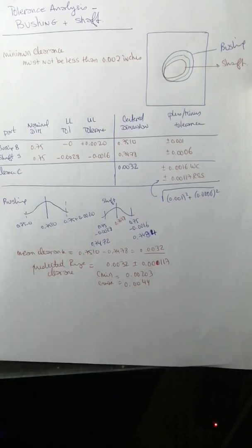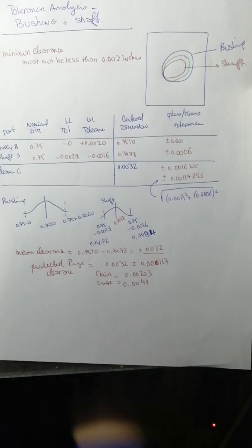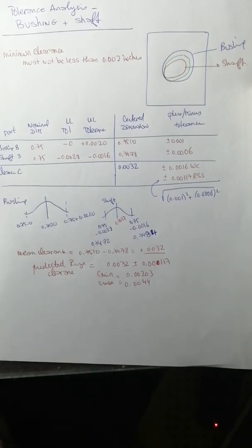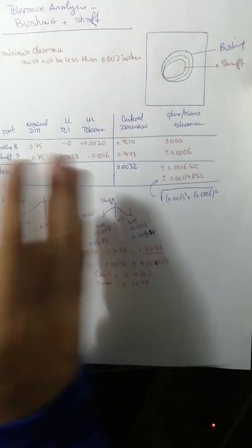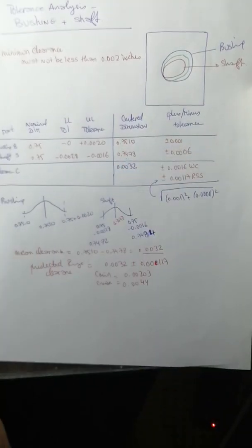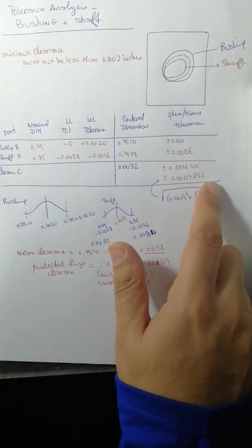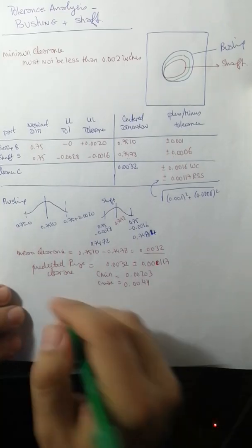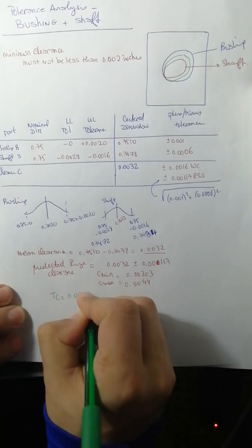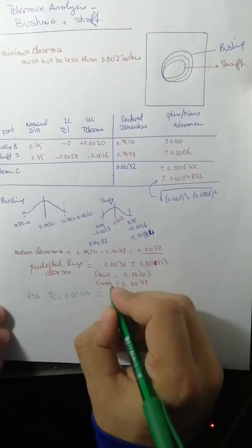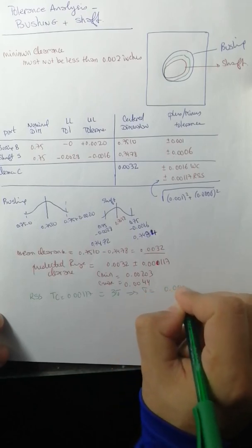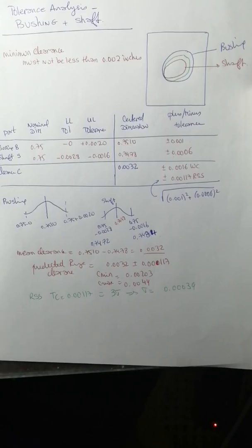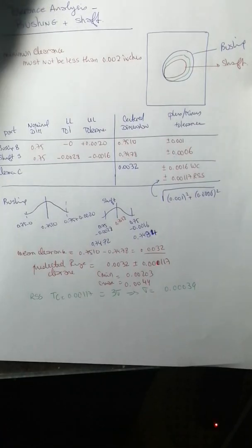I need to bring your attention that we've got the average which is 0.0032, but we've not got the standard deviation. We're all familiar with the concept of 6 sigma, which is the mu plus 3 sigma and mu minus 3 sigma. The tolerance of 0.00117 will be equal to 3 sigma, which implies sigma equals 0.0039.